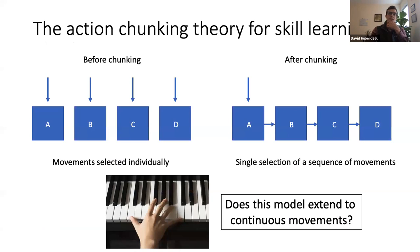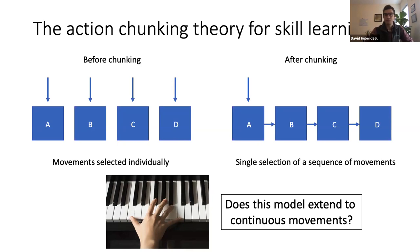How might people learn these continuous movement skills? One theory is what's called the action chunking theory. The idea is that if there are four movements — A, B, C, and D — required to be executed in order, then early in learning you might select each movement individually. But with a lot of practice, the theory goes that this sequence coalesces into what's called a chunk, where action selection occurs at the level of the chunk instead of at the level of the individual movements themselves.